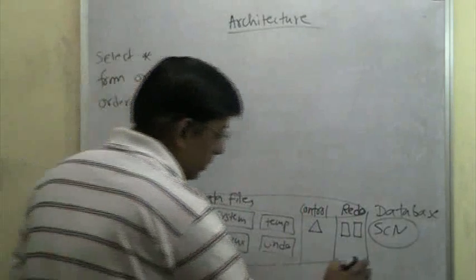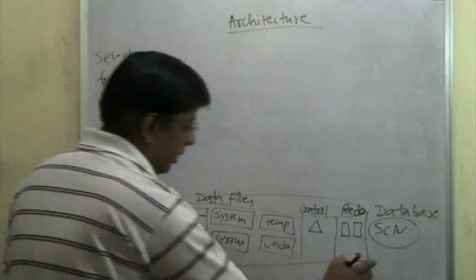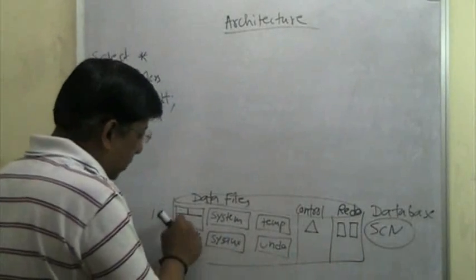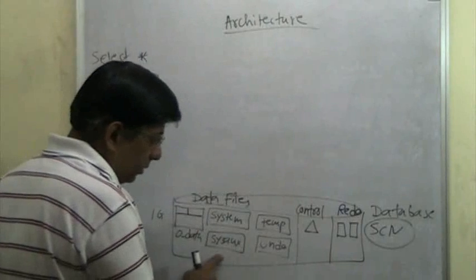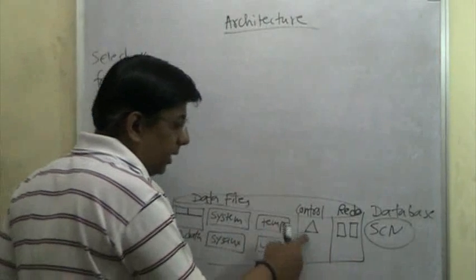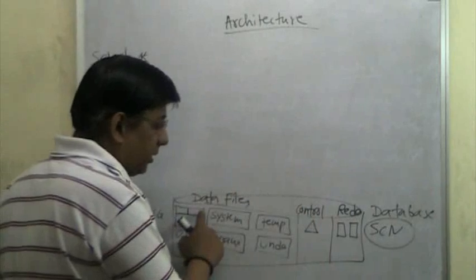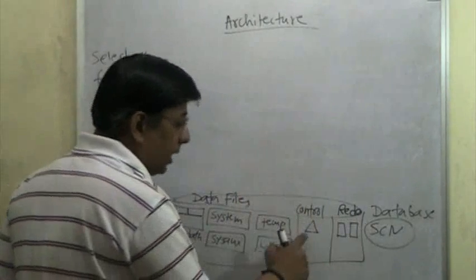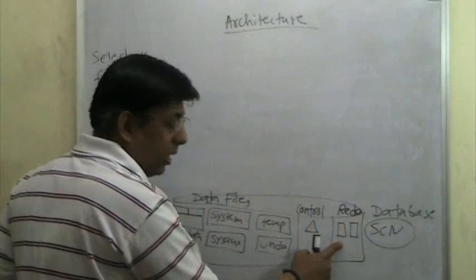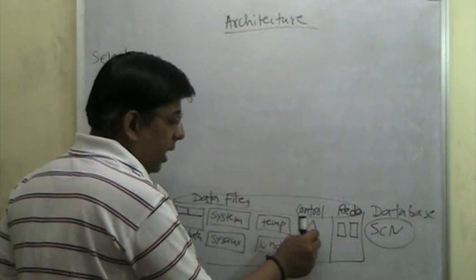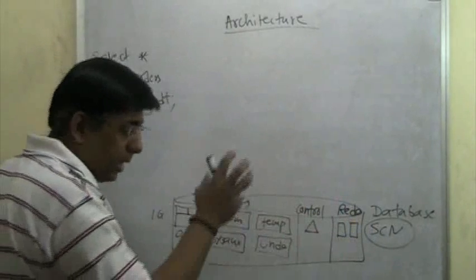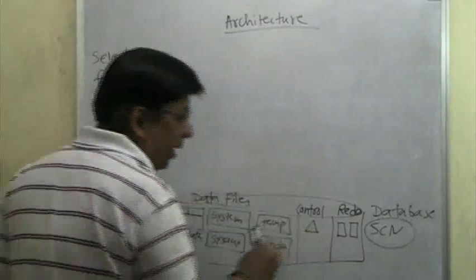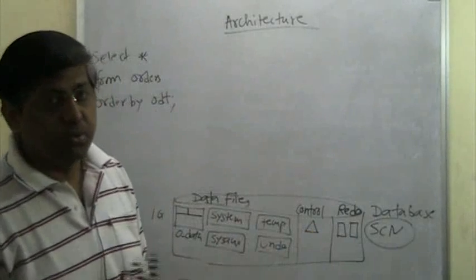So in a very short span, here is a summary: these are data files which contain the actual data and some other things. These are the control files that contain information about the data files, the age of the data file which is called the SCN, and what the redo files are. All that stuff is kept inside the control file. It really controls the database — that is why it is called a control file. Without access to the control file, your database is pretty much useless.